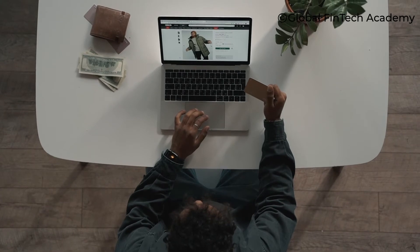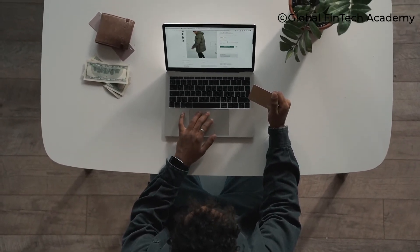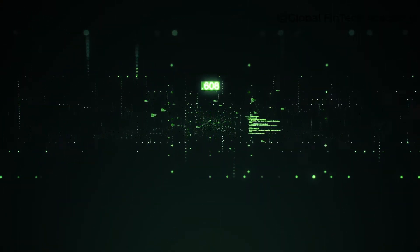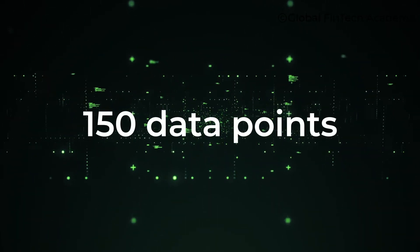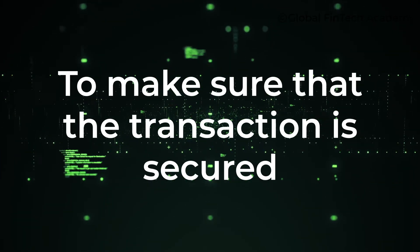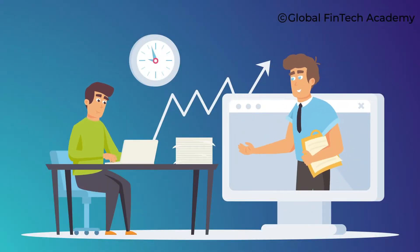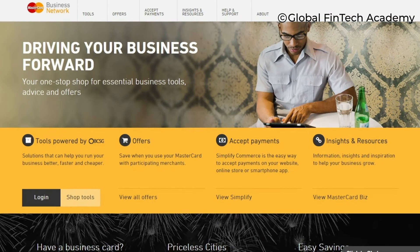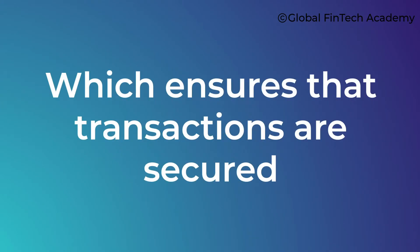You might think it's just a page where you enter details like your OTP or PIN and the transaction is done — but that's not how it works. That page and that system collect a lot of data. In fact, in 3D Secure 2.0, the system collects around 150 data points to make sure the transaction you're doing on an e-commerce website is secure. We'll also talk about what those data points are — not all 150, but from Mastercard's website we'll cover the key secure data points that ensure transactions are protected.